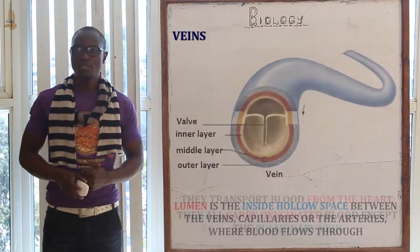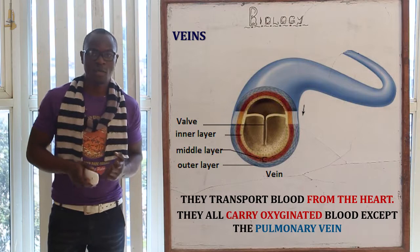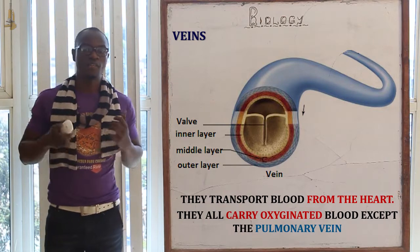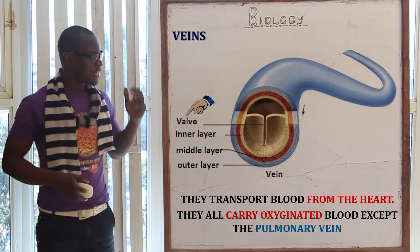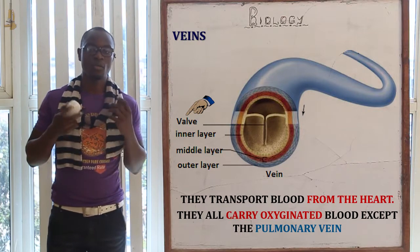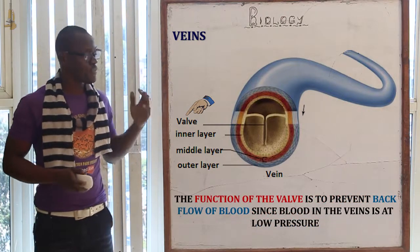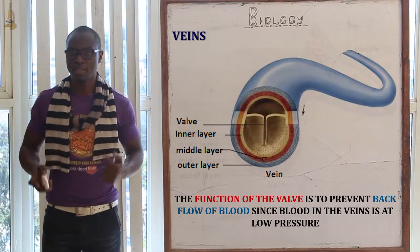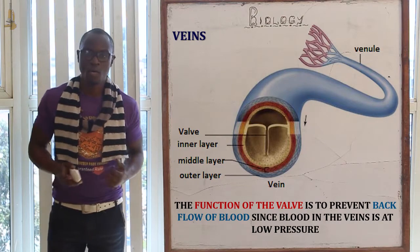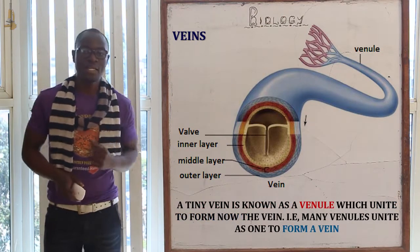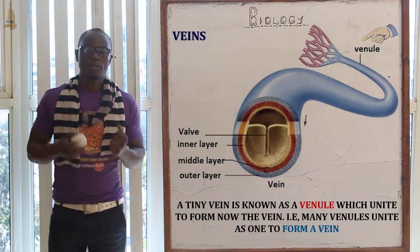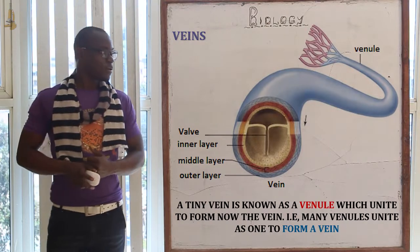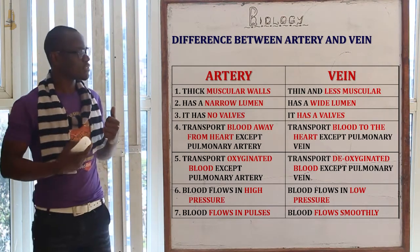Now let's look at the veins. Veins are less muscular and very elastic compared to arteries, and blood flows in them at very low pressure. At regular intervals, veins have valves whose function is to prevent the back flow of blood since it flows at very low pressure. A tiny vein is known as a venule, and many venules unite to form the main vein.